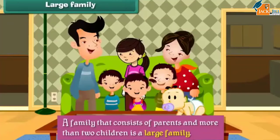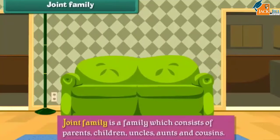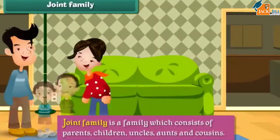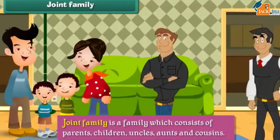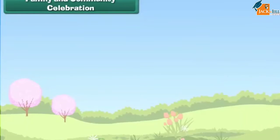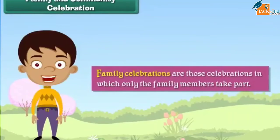A large family is a family that consists of parents and more than two children. A joint family is a family which consists of parents, children, uncles, aunts, and cousins.